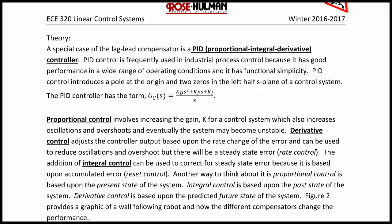The addition of an integral controller can be used to correct for steady-state error because it is based upon accumulated error, and it is sometimes referred to as reset control. Another way to think about it: proportional control is based upon the present state of the system, integral control is based upon the past state of the system, and derivative control is based upon the predicted future state of the system.